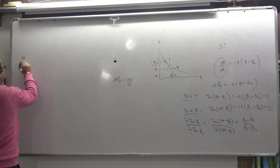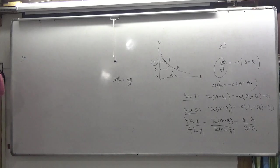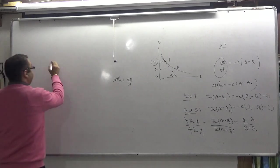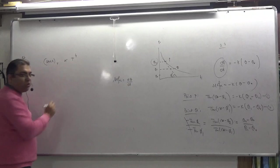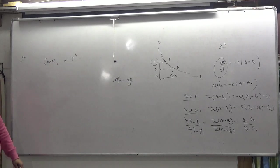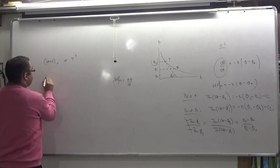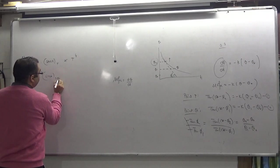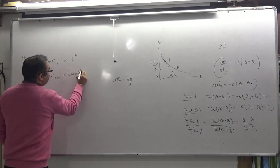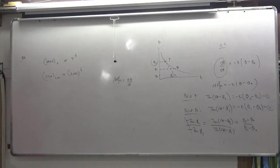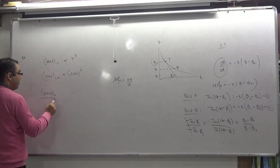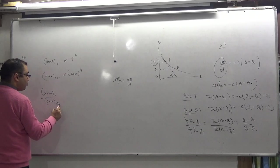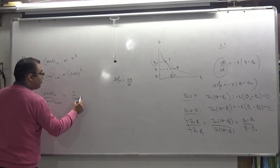Question number 8: two blackbody graphs at temperatures T and 2000 K are given. The area under the curve at temperature T is directly proportional to T to the power 4 — Stefan's Law and Wien's Displacement Law. In the second case, area at 2000 K is directly proportional to 2000 raised to power 4. If we divide: area at T divided by area at 2000 equals (T divided by 2000) raised to the power 4.